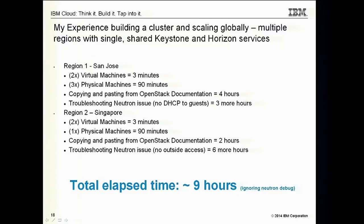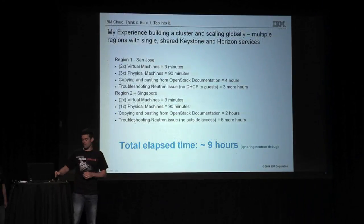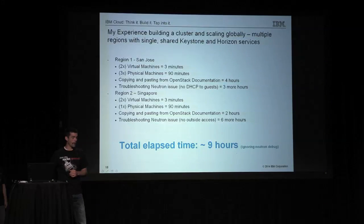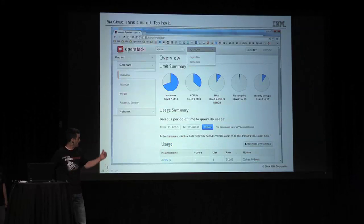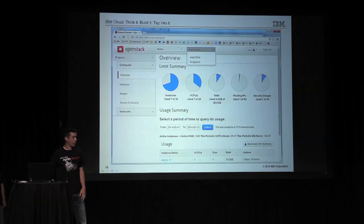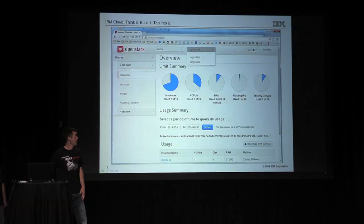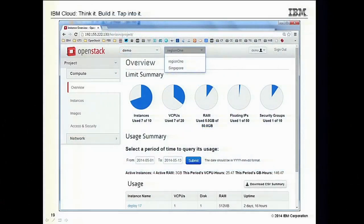I will be putting out a blog post on how I did this in the next couple of days, probably early next week, so that you can try to replicate it. It was very easy and something I'd recommend if you want to get started. Here's my dashboard running — you can see my two regions, Region 1 and Singapore. I didn't realize I should have named Region 1 San Jose from the start.